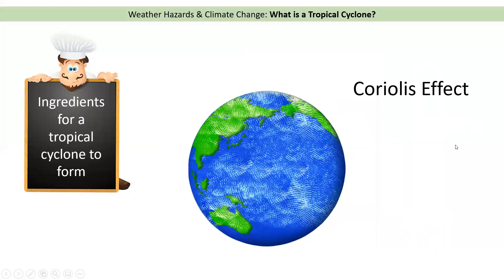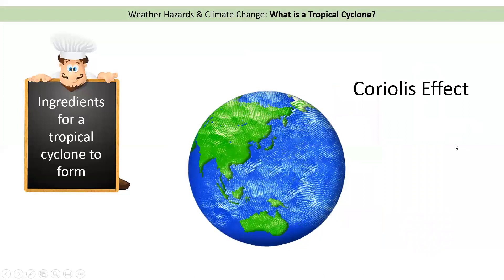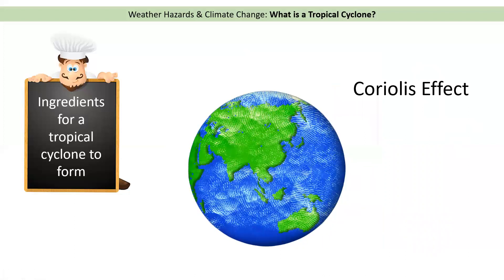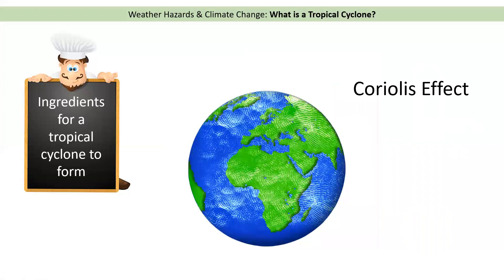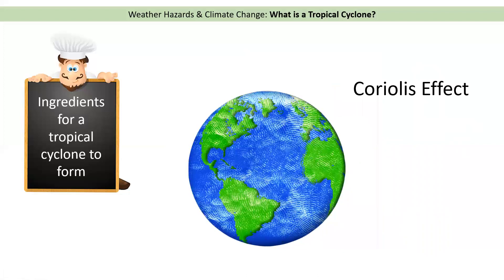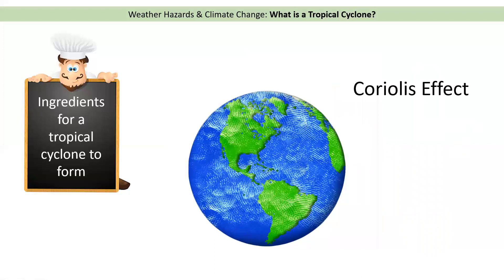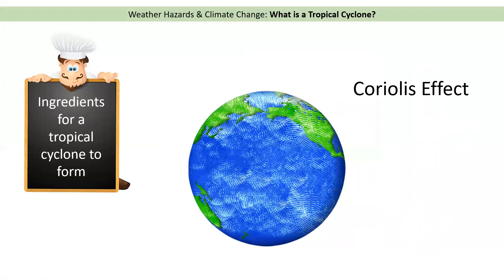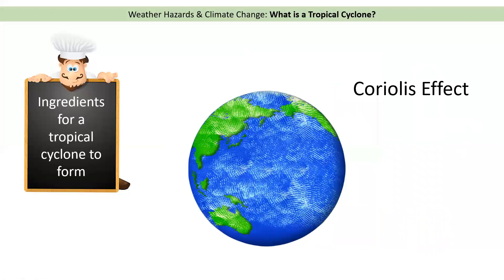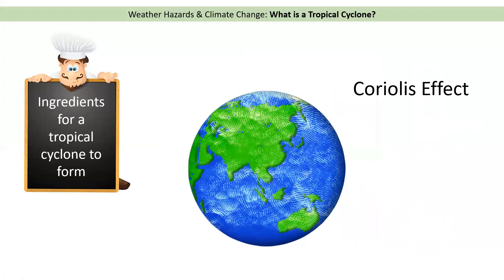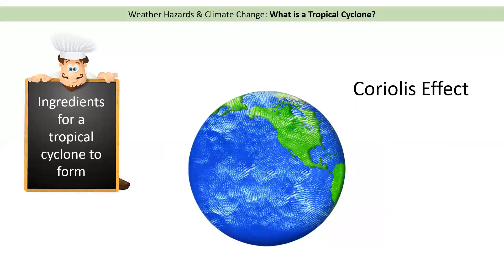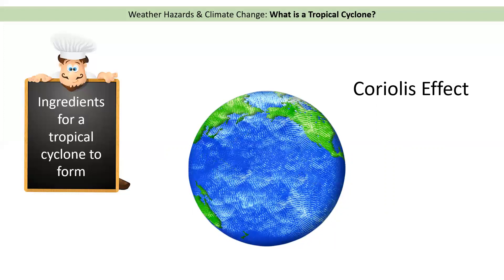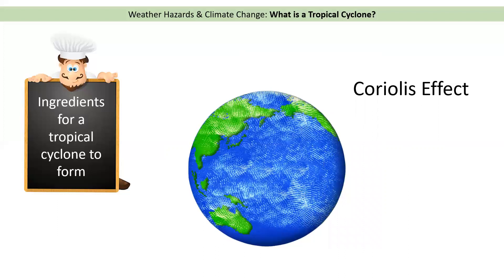The last thing we need is something called the Coriolis effect. You need to know that term — it's very important. The Coriolis effect describes why a tropical cyclone spins, and it's all because the earth is spinning itself on its axis. Because the earth is spinning on its axis, that creates a spinning motion on earth, and that's why our tropical cyclones spin.